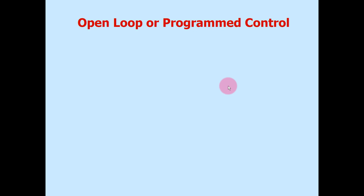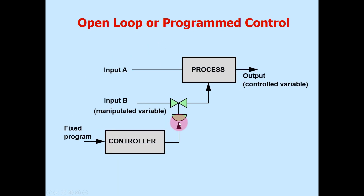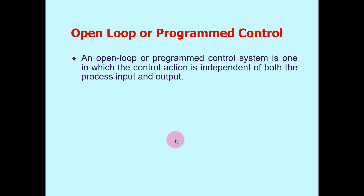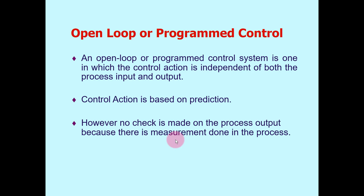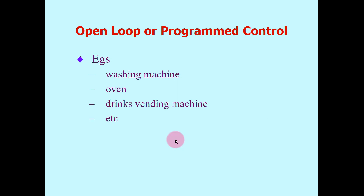Open loop control, sometimes called program control, is one in which the control action is independent of both the process input and output. Open loop means the loop is open — there is no process variable feedback from the process to the controller, meaning no field instrument such as a temperature transmitter measures the process and feeds the signal back. Control action is based on prediction, and no check is made on the process output. Examples of open loop control include washing machines and ovens.